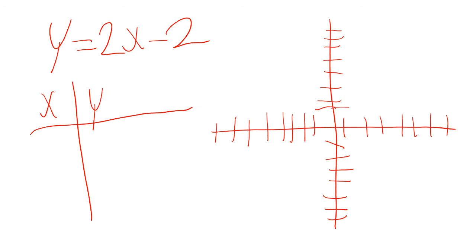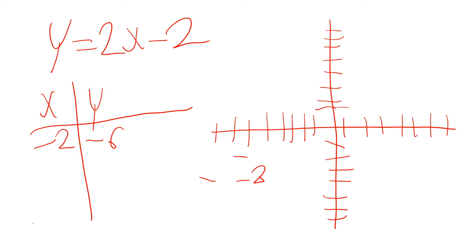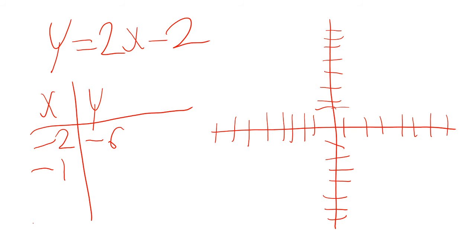I'm going to start with x equals negative 2. When I plug in negative 2: 2 times negative 2 is negative 4, and negative 4 minus 2 is negative 6. Now let's go to negative 1. Plug in negative 1: 2 times negative 1 is negative 2, and negative 2 minus 2 is negative 4.